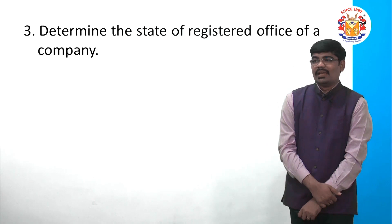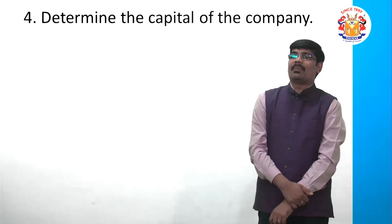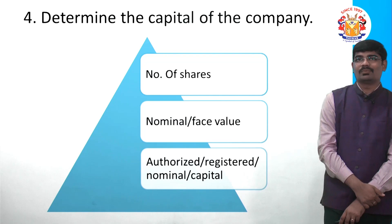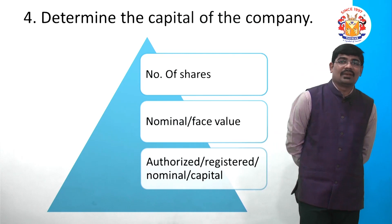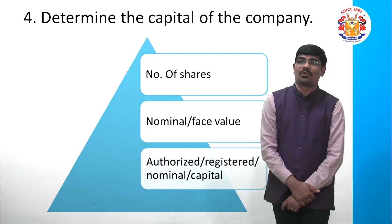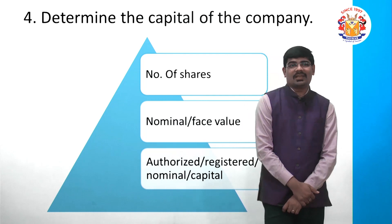Once objects are decided, you also need to decide at this stage in which state you want to keep the registered office, and you need to decide the capital of the company. Three main things to decide: number of shares, face value of those shares — multiply both and you get the authorized capital, which is also called registered capital or nominal capital. Stamp duty will also be payable on this authorized capital.